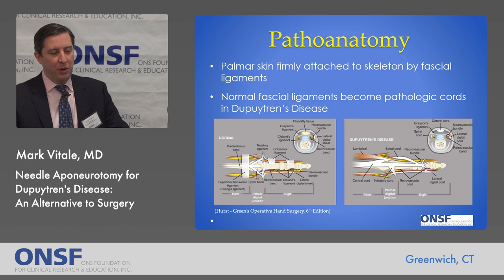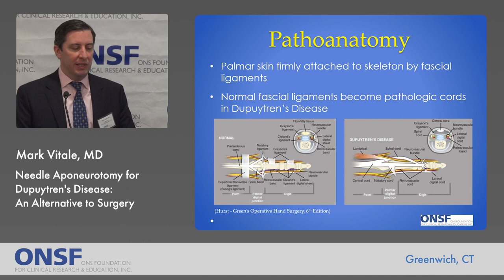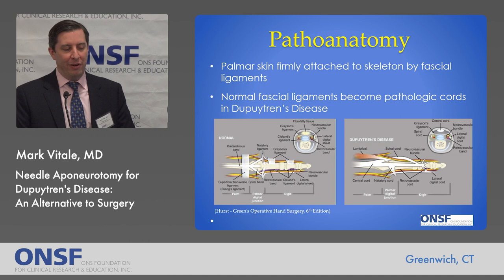When looking at the pathoanatomy of Dupuytren's disease, there are normal ligaments that connect the skin on the palm side of the hand to the bones in the hand. These normal fascial ligaments become pathologic in Dupuytren's disease, forming various types of cords — central cords, pre-tendinous cords, spiral cords — which can cause the fingers to curl into the palm and have various types of deformity.